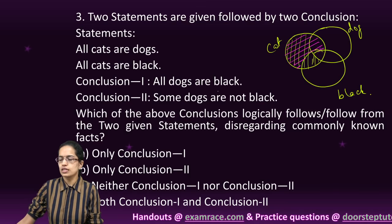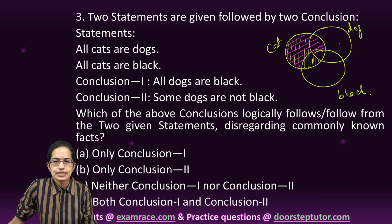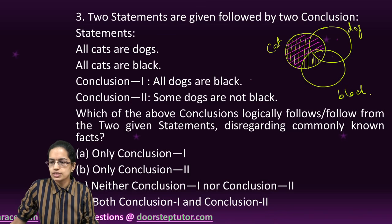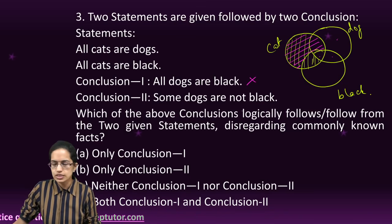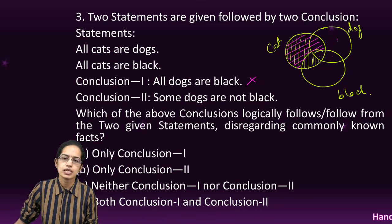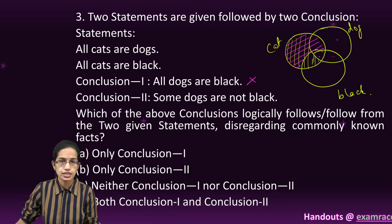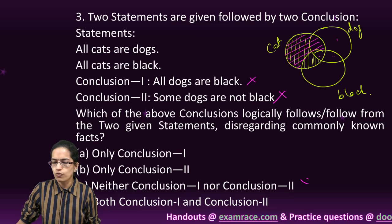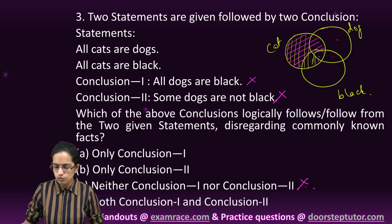Based on this, the first conclusion says all dogs are black. That's incorrect. Dogs can be here, here, or here in any of the three locations. The second conclusion says some dogs are not black. Again, I cannot say because dogs' position is not defined. So both conclusions do not follow, neither conclusion would follow.